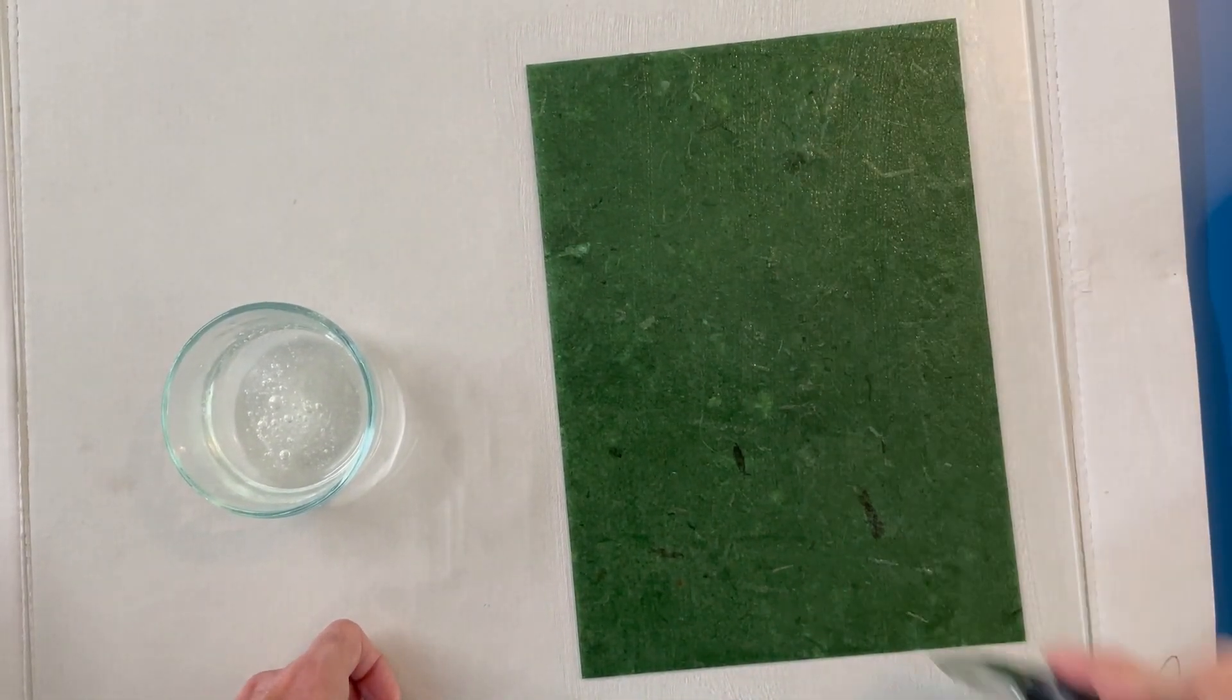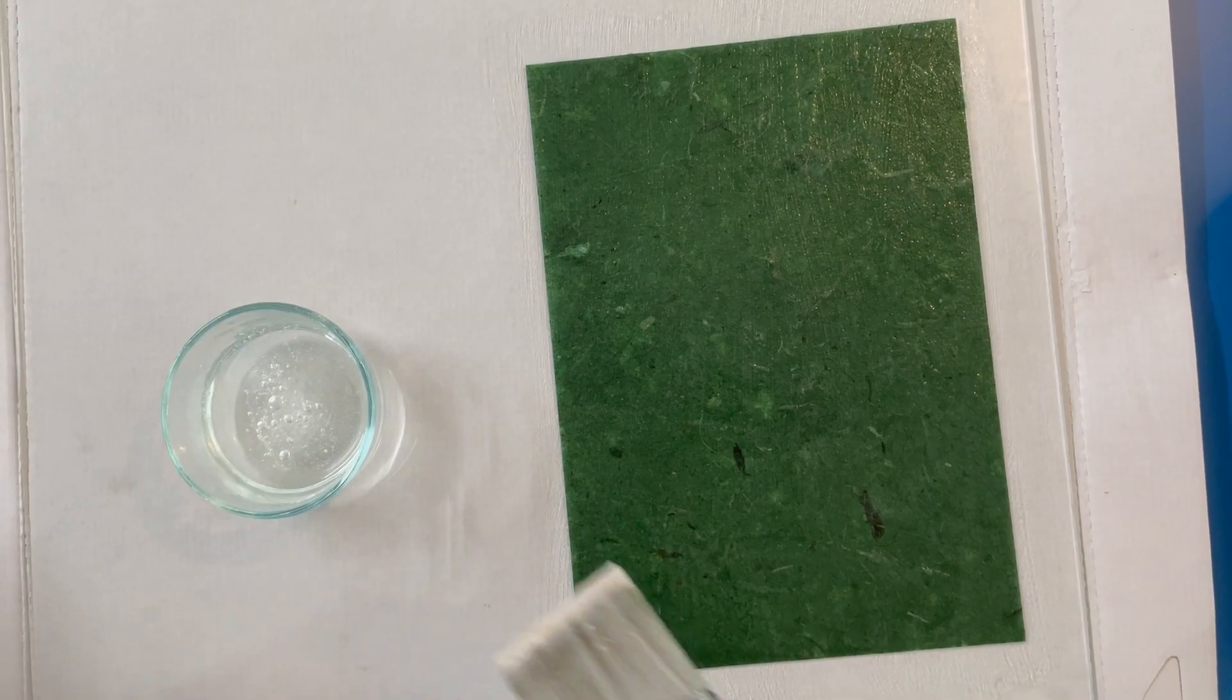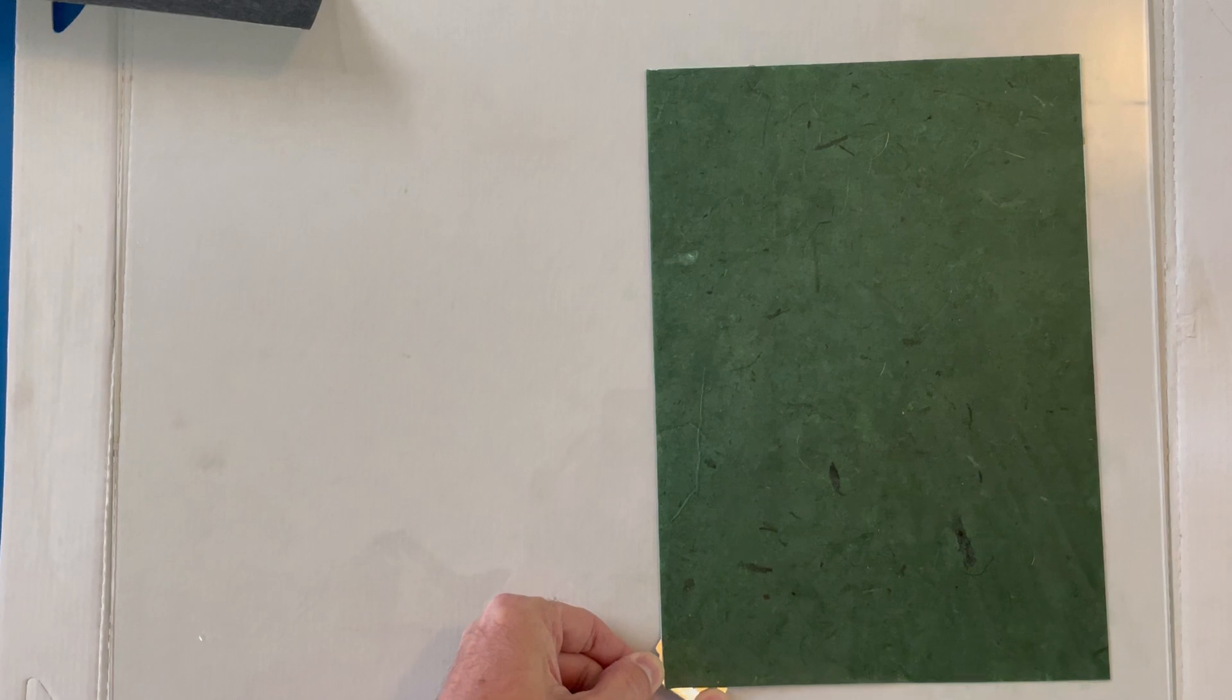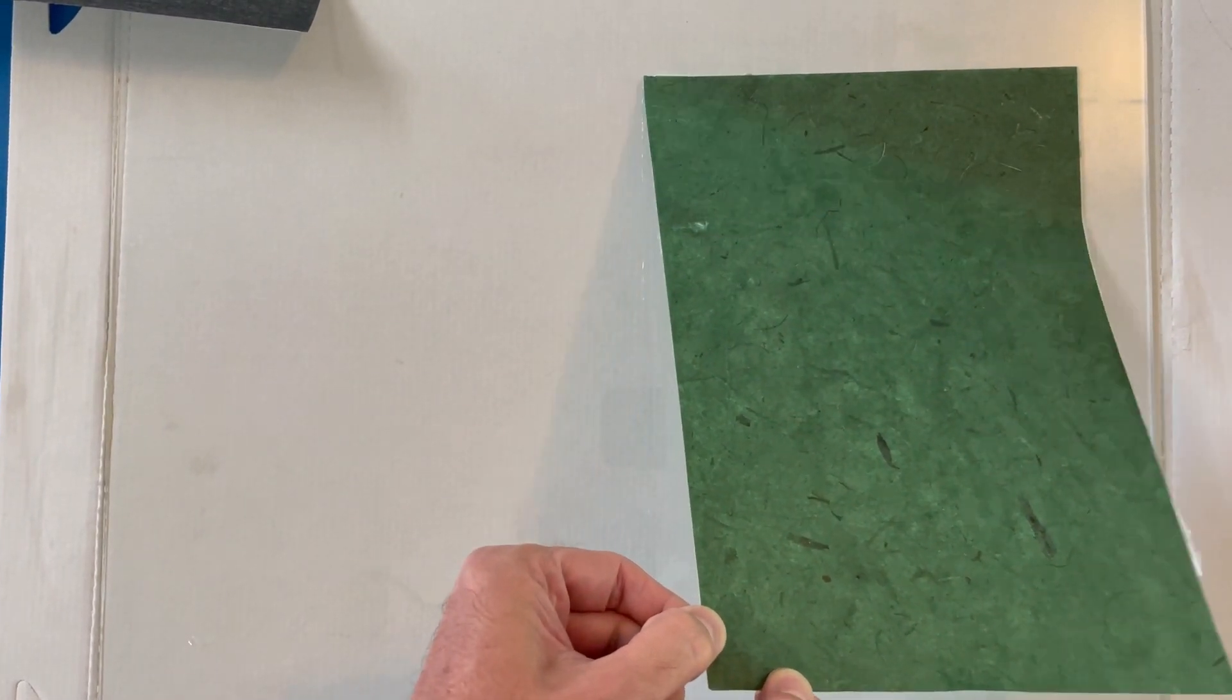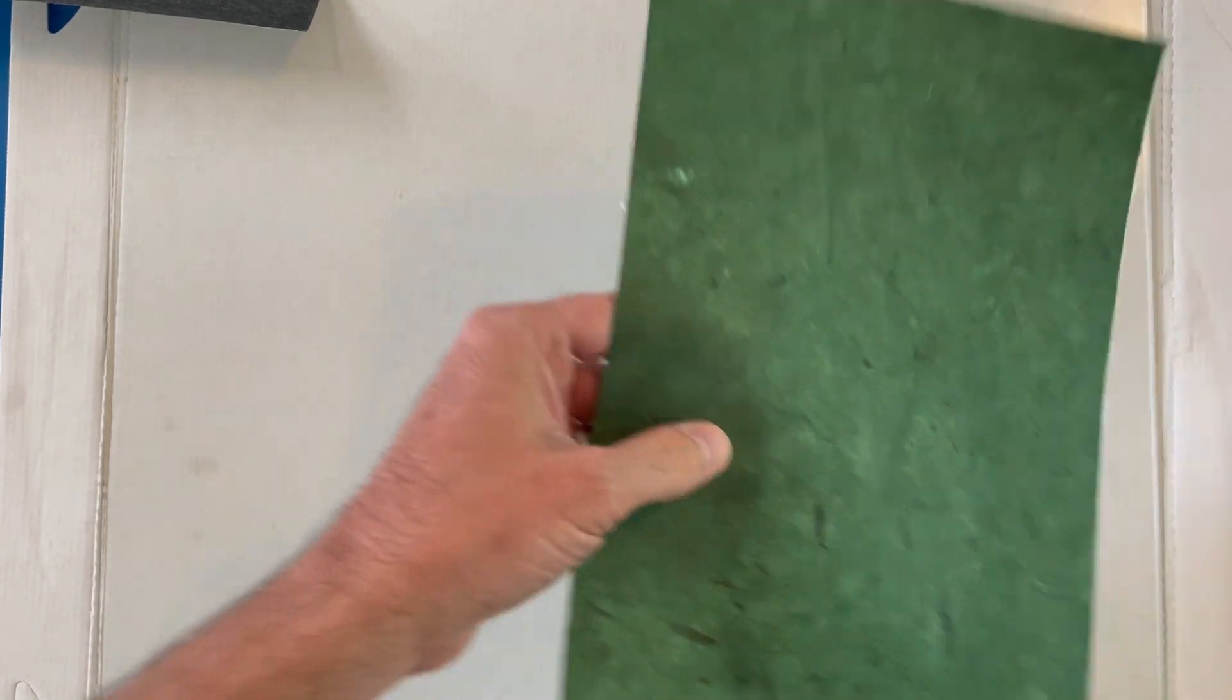I let the paper completely dry out, and this takes about 24 hours. When it's completely dry, I use a straight edge razor blade to get things started at a corner, and then the entire sheet should just peel cleanly off of the glass.